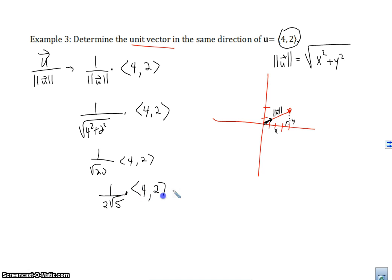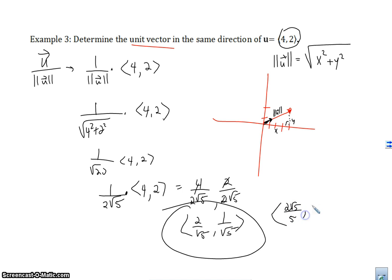And I'm going to multiply it into this vector. And get 4 over 2 root 5, and 2 over 2 root 5. Simplify that to 2 over root 5, and 1 over root 5. Now, if you really want to be technical, and you don't want to have these square roots here, you can multiply both top and bottom by the square root of 5. You'll get 2 root 5 over 5, and root 5 over 5. And this is really your answer. All right, so that's it. That is the vector basics, and we will see you next time. Bye.